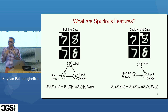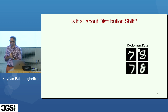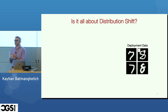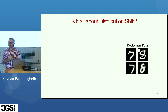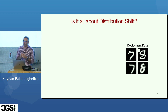Currently, spurious features are defined as a change between the distribution of test and train data. But that's not sufficient. Consider: is it all about distribution shift? Now imagine your test data is the same — you still distinguish 7 and 8, and sometimes the white patch happens for 8 and sometimes doesn't appear with no correlation to the label. But now you train two models. In Model 1, the patch always happens with digit 7. In Model 2, all digit 7s come with a prime number on the top left, and all digit 8s come with a composite number.